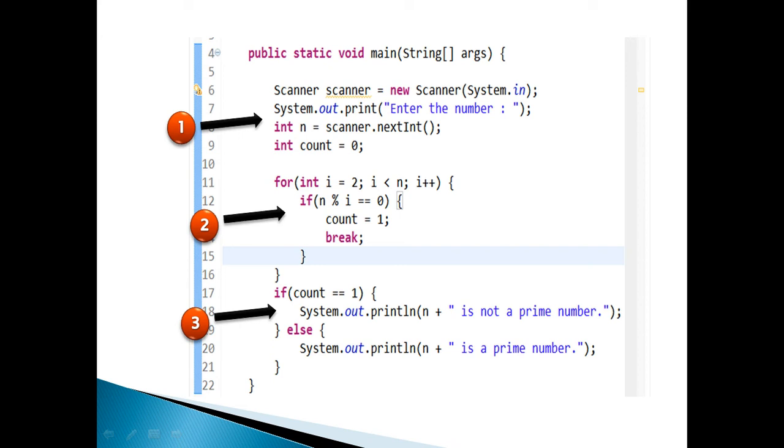Step 3. If count value is 1, then it confirms that number is not a prime number, as there exists yet another number between 1 and number itself which is a factor to number. Else if count is 0, then it confirms that number is a prime number. Print the result on the console.